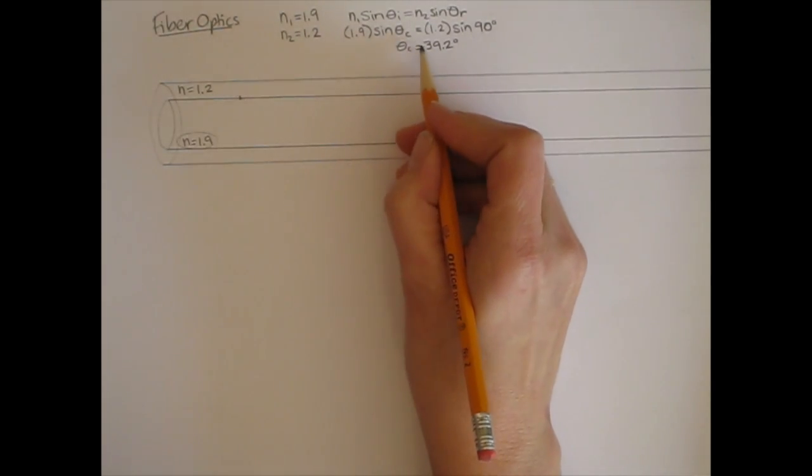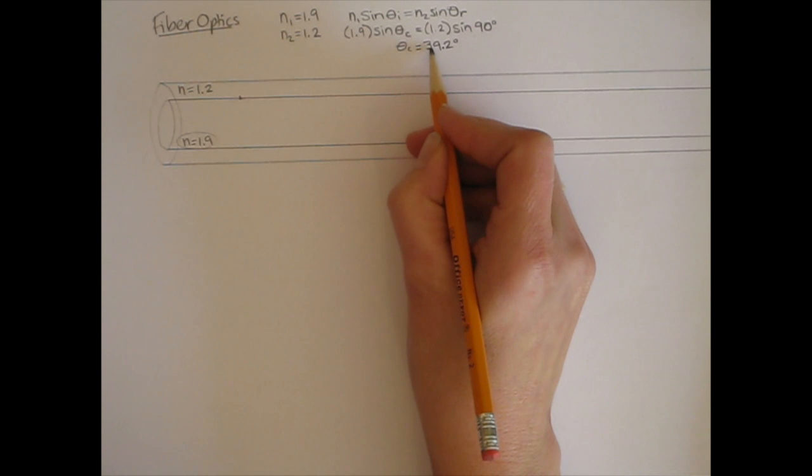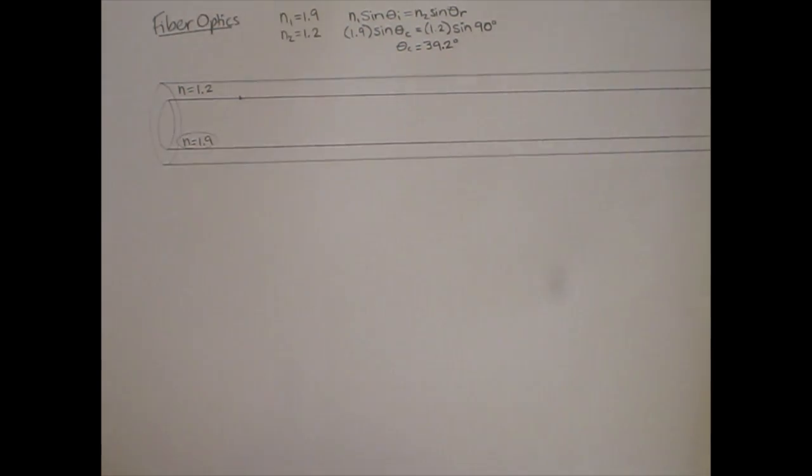So this means in order to get total internal reflection, I need to have an incident angle that's larger than 39.2.